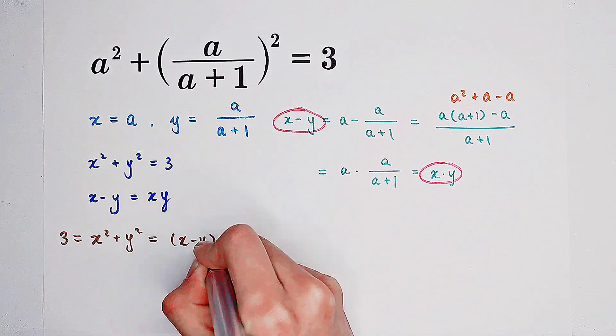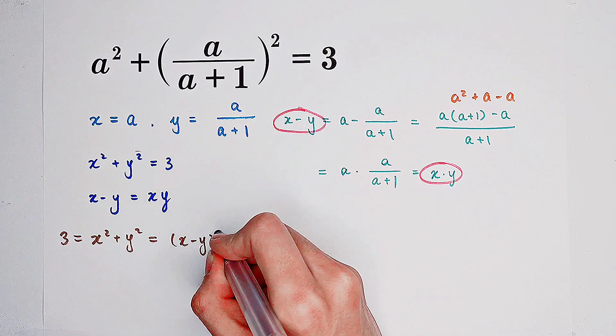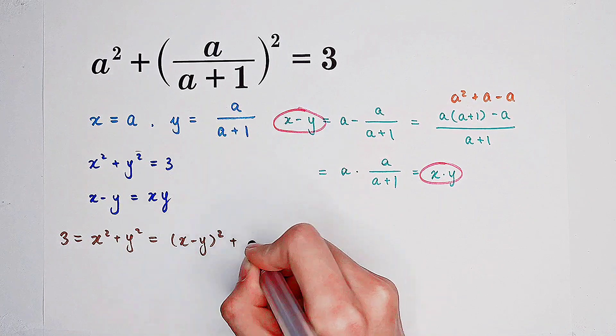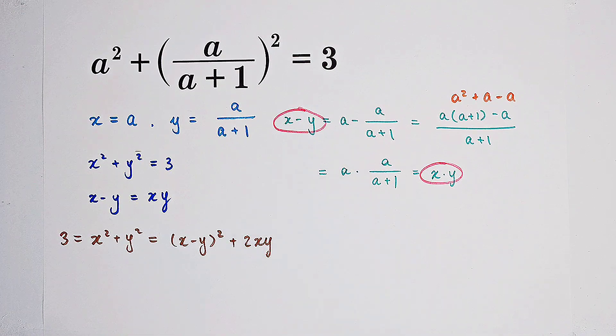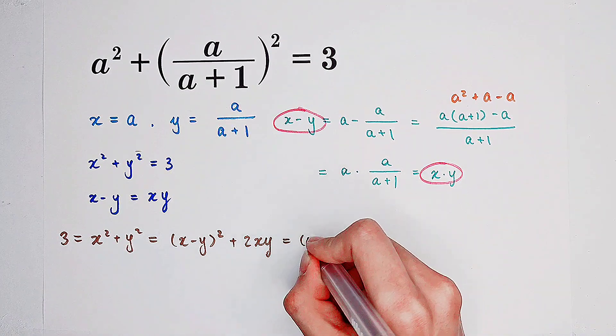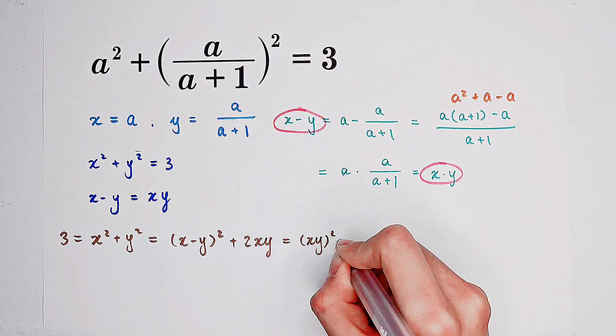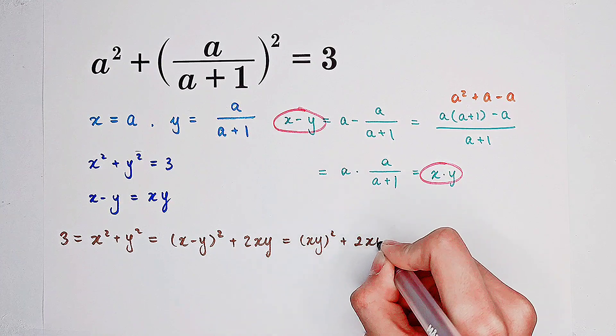Can be expressed by x minus y and x times y. It is x minus y all squared plus 2 times xy. Because x minus y equals xy, so it's just xy all squared plus 2 times xy.